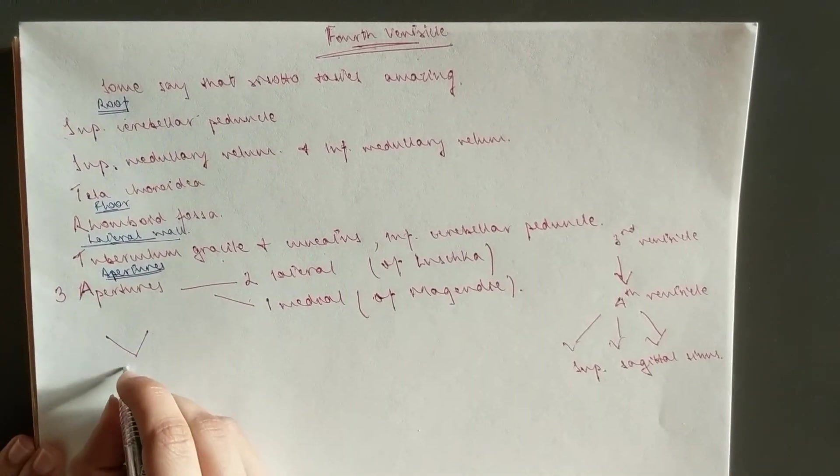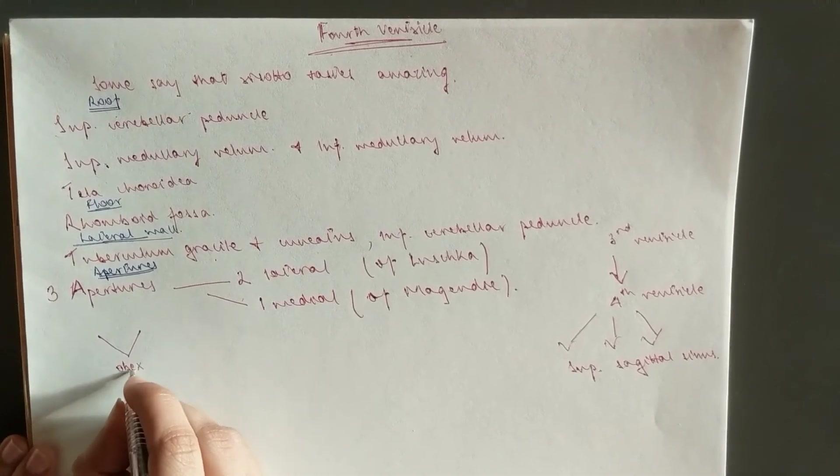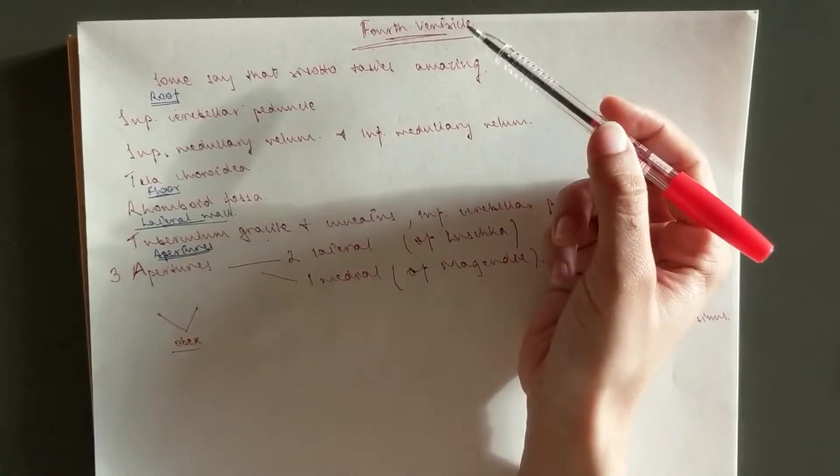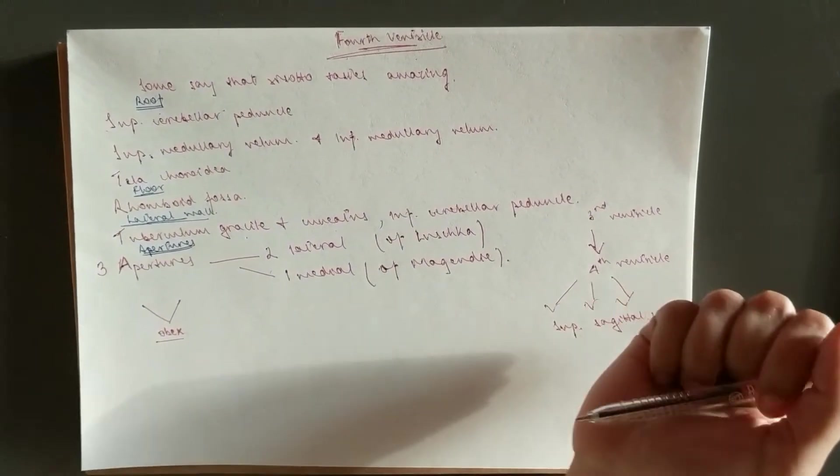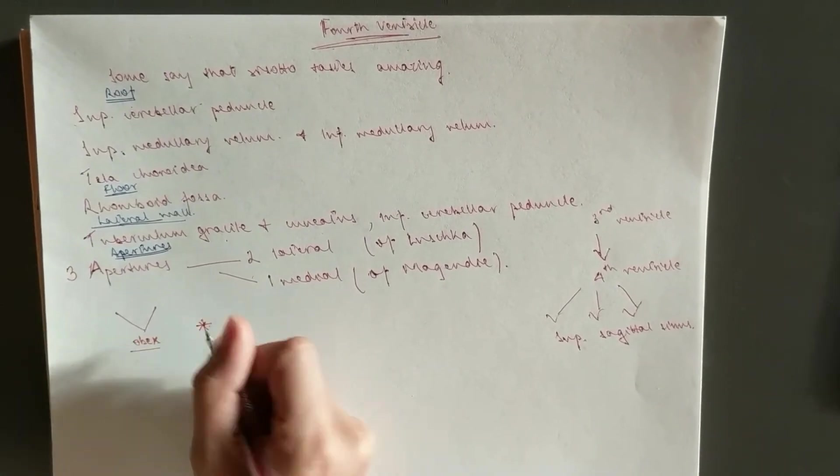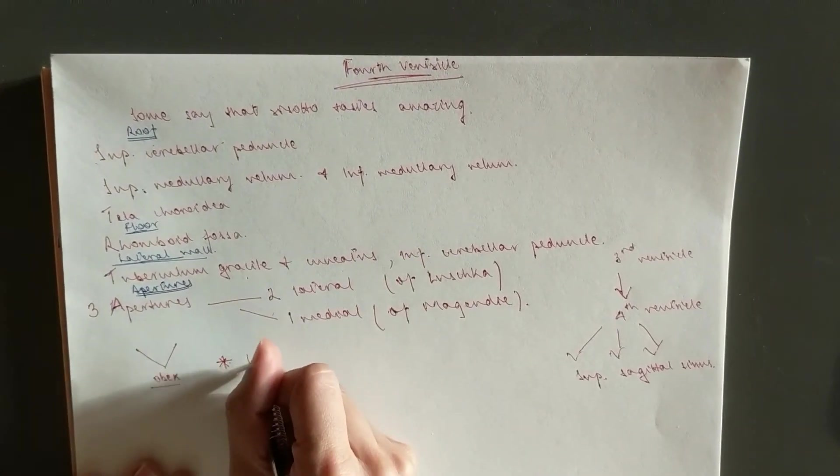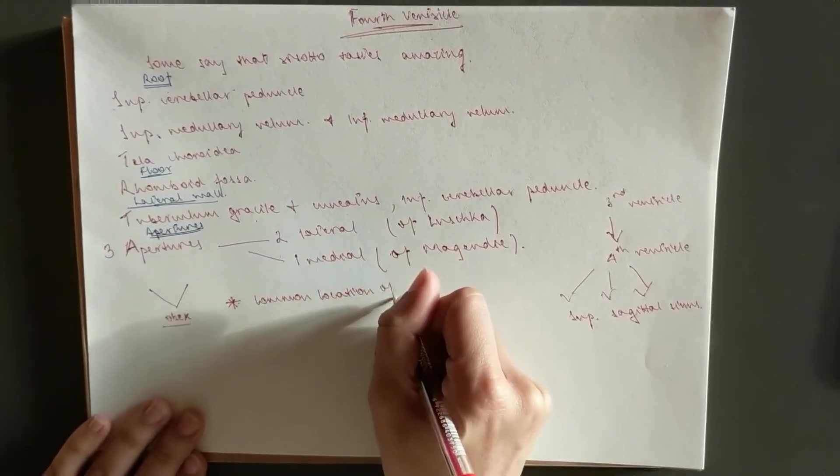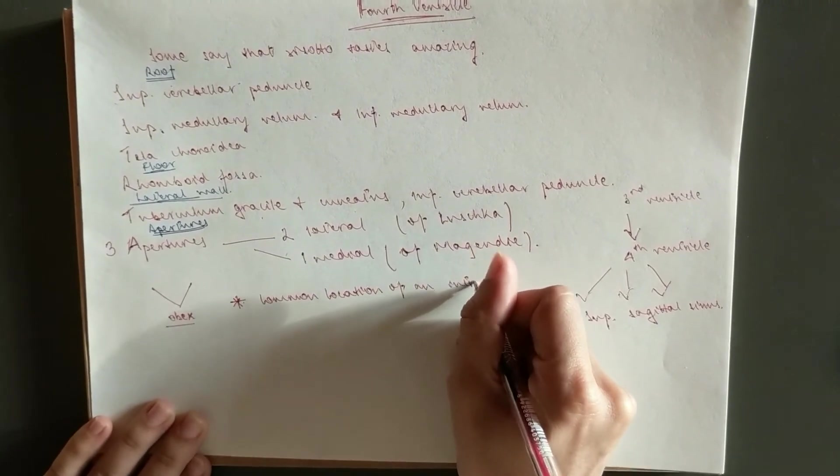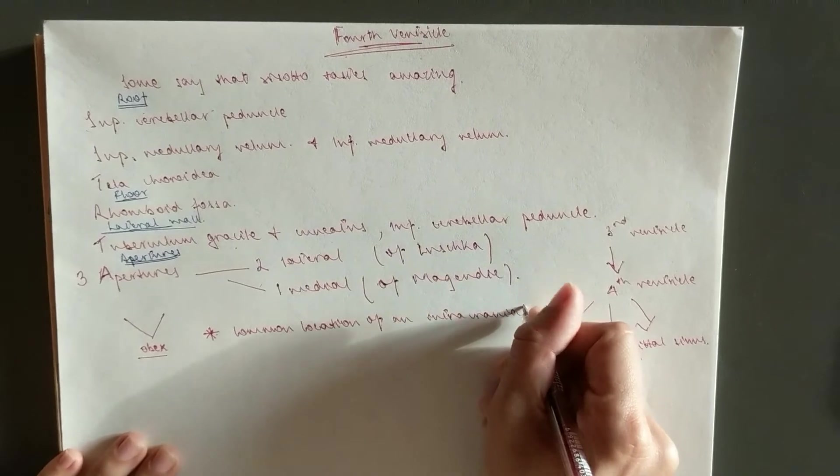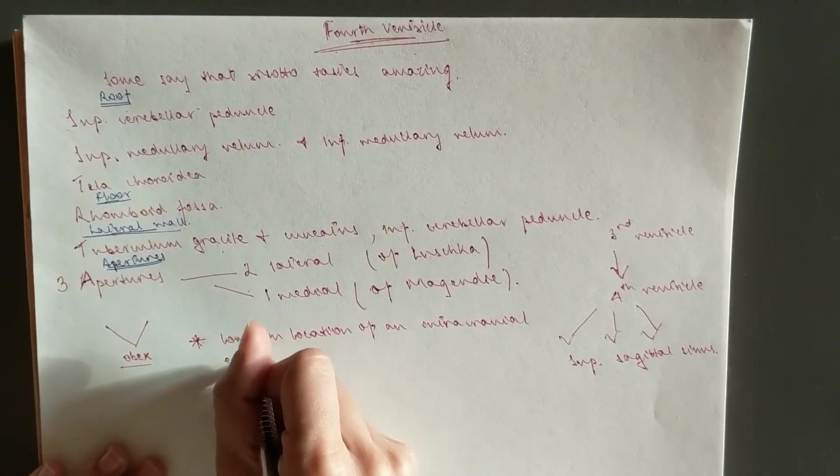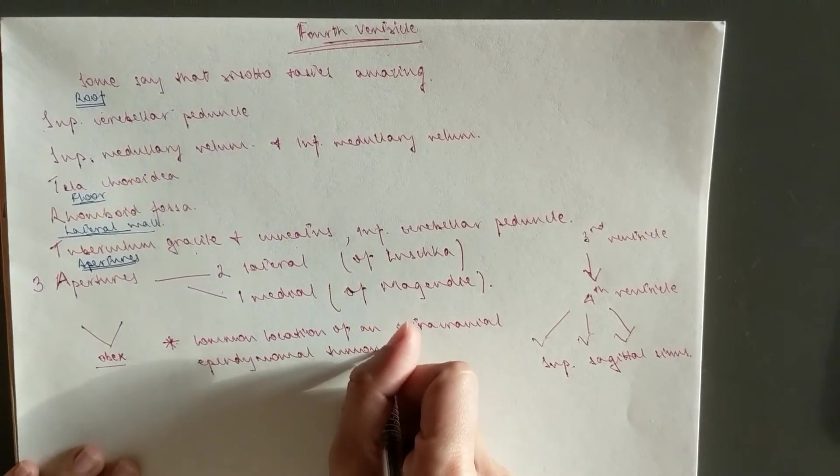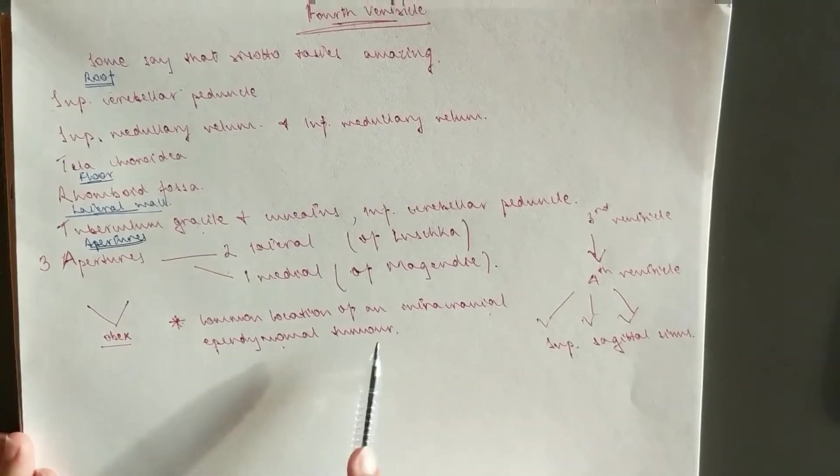And the base of the fourth ventricle forms the urbex. Then it's filled with the CSF. You know that the ventricles are filled with the cerebrospinal fluid. And one more thing that you need to know is that this fourth ventricle is the common location of an intracranial ependymomal tumor.